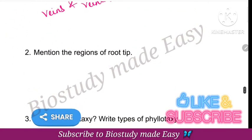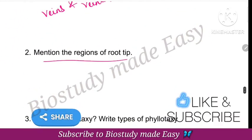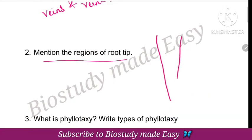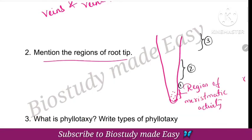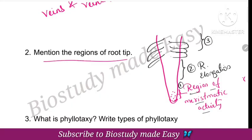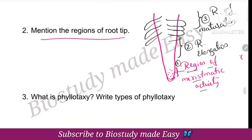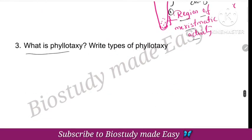Types of venation: one is reticulate venation and the other is parallel venation. These are the two types. Next, mention the regions of the root tip. The regions of the root tip are: the region of meristematic activity, the region of elongation, and the region of maturation — where root hairs are present.